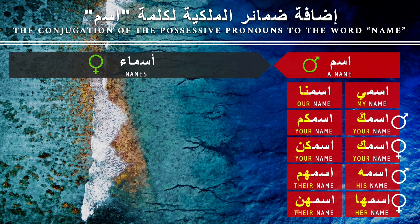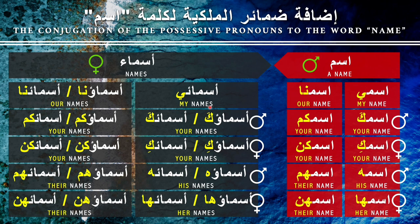Now let's practice with the plural format of 'name,' which is 'asma.' So: 'my names' is 'asma'i'; 'our names' is 'asma'una'; 'your names' is 'asma'uk,' 'asma'ak,' or 'asma'ik,' depending on grammatical position in the sentence. 'Asma'ukum,' 'asma'akum' for masculine plural; 'asma'uki,' 'asma'aki' for feminine singular; 'asma'ukum,' 'asma'akun' for plural; 'asma'uh,' 'asma'ah' for his; 'asma'uhum,' 'asma'ahum' for their masculine; 'asma'uha,' 'asma'iha,' or 'asma'aha' for her names; 'asma'ahunna' or 'asma'ahun' for their feminine.